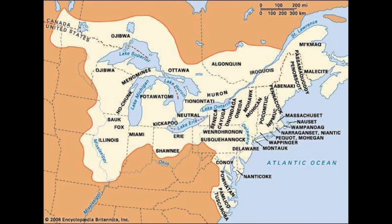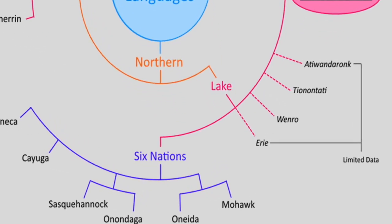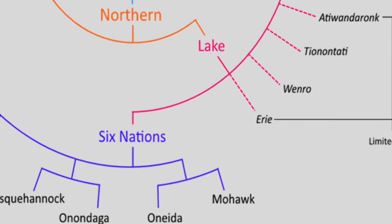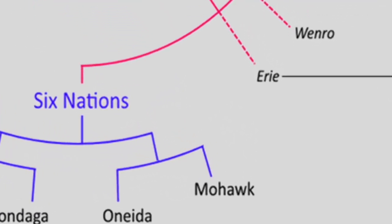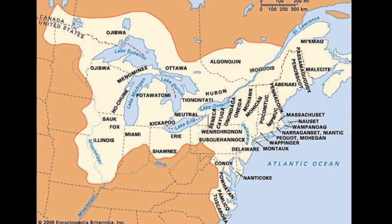The Iroquois are famous for having formed in the 14th century a powerful confederation composed of the Mohawks, Oneidas, Onondagas, Cayugas, Senecas and Tuscaroras. These languages are thus fairly close, and some are mutually intelligible to some extent, but they each have specific features.